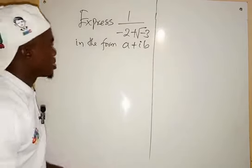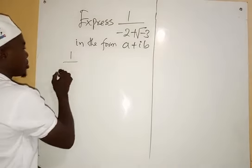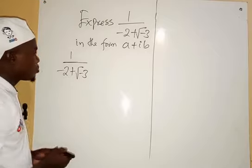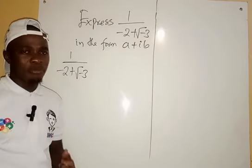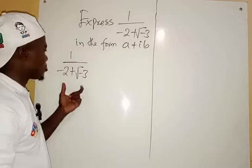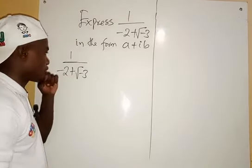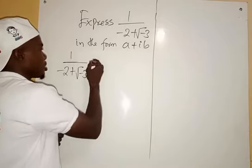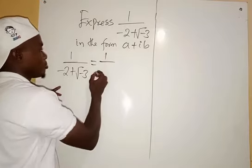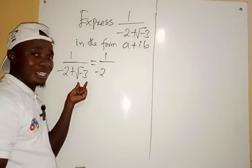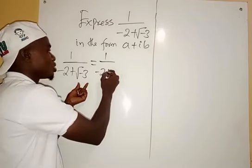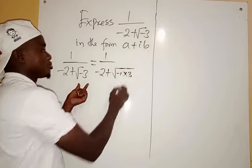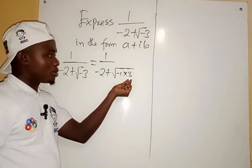So look at 1 over minus 2 plus root minus 3. We're going to use rationalization, but before that, let's rewrite this. We can write root minus 3 as root of minus 1 multiplied by 3, because minus 1 multiplied by 3 still gives us minus 3.